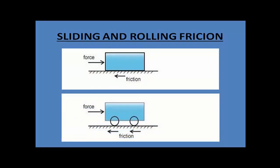Now let us imagine that we have wheels attached to this object. If we try to push it, the object will move much more easily compared to when there were no wheels attached. In both cases there is a force of friction acting, and the friction acts in the direction opposite to the movement of the object.